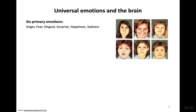Ekman came up with six fundamental, universal emotions: anger, fear, disgust, surprise, happiness, and sadness. He described them by introducing what he called the Facial Action Coding System, or FACS, which refers to a specific pattern of activation of the musculature of the face. For instance, whenever you feel happy you tend to smile — the corners of your mouth come apart. If you feel fear, your eyes tend to be wide open, facilitating a wider range of visual input.